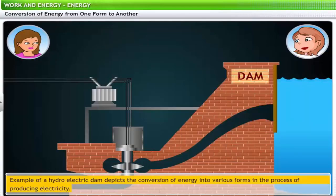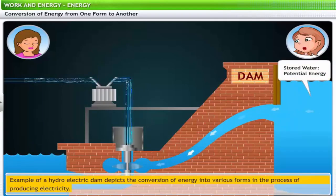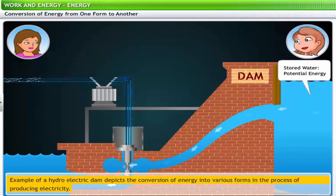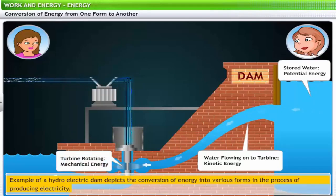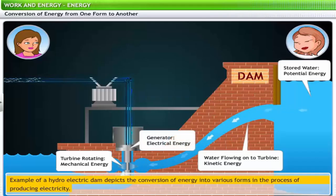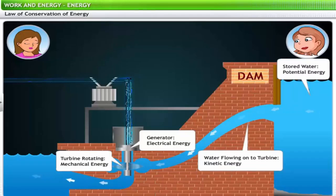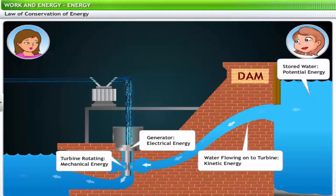A good way to understand energy conversion is to examine how electricity is produced in a hydroelectric dam. The stored water in the reservoir possesses potential energy. When this water is released into the turbine through the penstock, the potential energy converts into kinetic energy. The flowing water rotates the blades of the turbine, which is mechanical energy. These rotating blades then produce electrical energy. So basically, energy gets converted from one form to another.